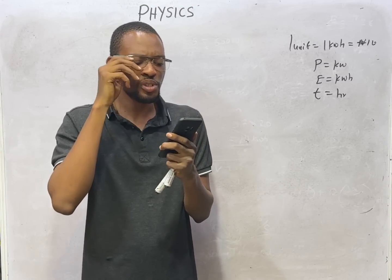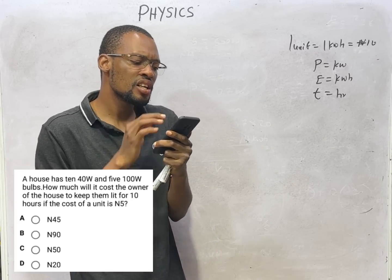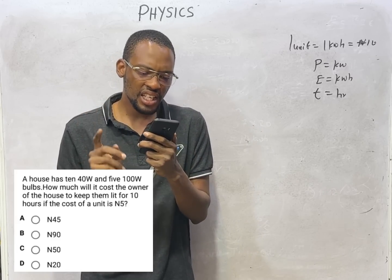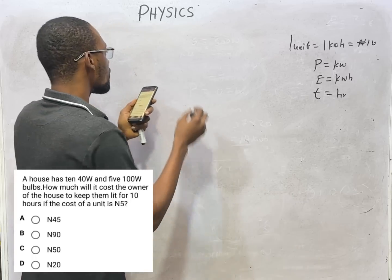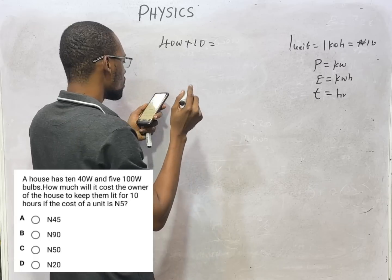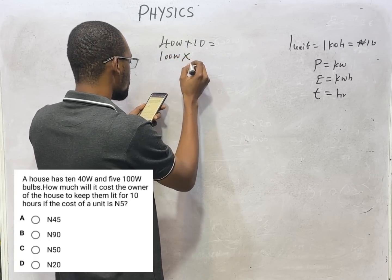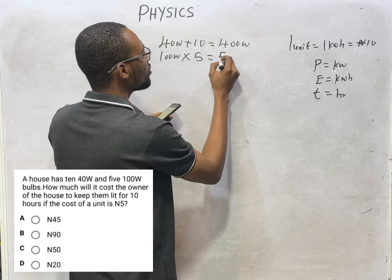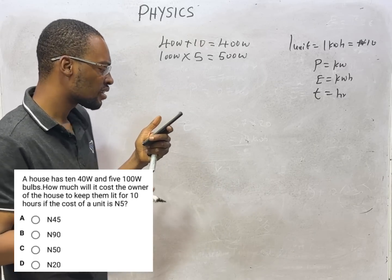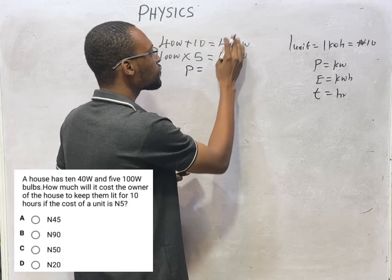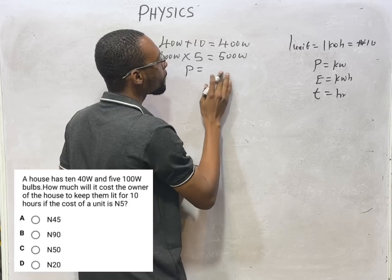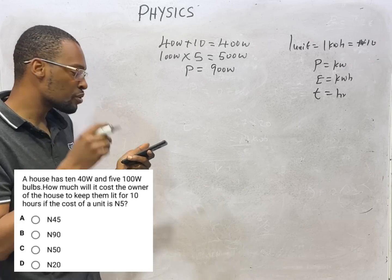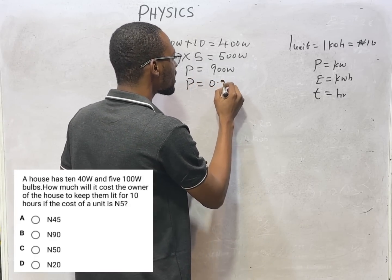Now if you in any way got confused about the previous question, check this out. A house has 10 40-watt and 5 100-watt bulbs. For 40 watts we have 10, giving 400 watts. For 100 watts we have 5, giving 500 watts. The total power consumed is P = 400 watts plus 500 watts, which equals 900 watts. For commercial purposes, we convert to kilowatt: 0.9 kilowatt.